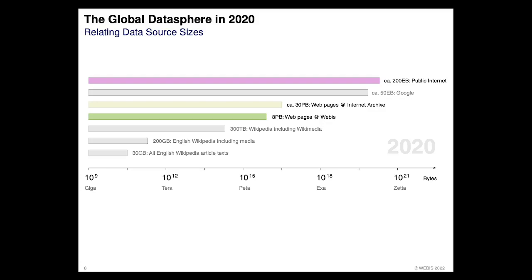From below, what has been called big data or analyzed for understanding the web also includes just the English Wikipedia — about 30 gigabytes including metadata and XML. Including all non-textual media, it's 200 gigabytes, which still fits on your hard disk. Taking everything the Wikimedia Foundation has collected, it's 300 terabytes — so they already need more than one computer to store and serve it. Where are we in between with our web archive?